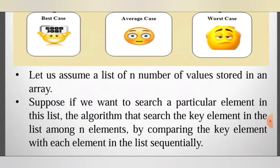Let us assume a list of n number of values stored in an array. If you want to search a particular element in this list, the algorithm searches the key element among n elements by comparing the key element with each element in the list sequentially.